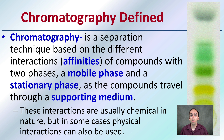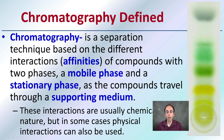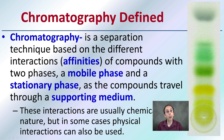And what you typically end up with, at least in paper chromatography, is what you see right over here — those bands that occur of different color separations.